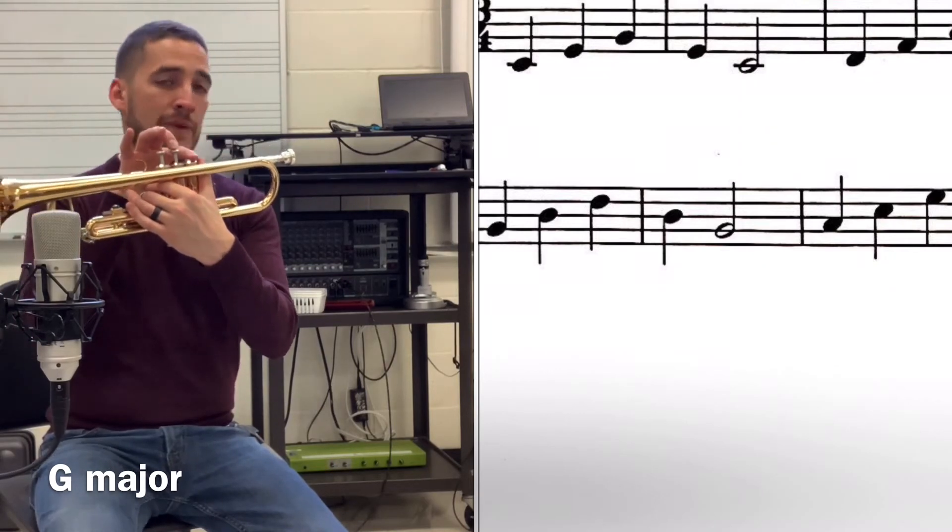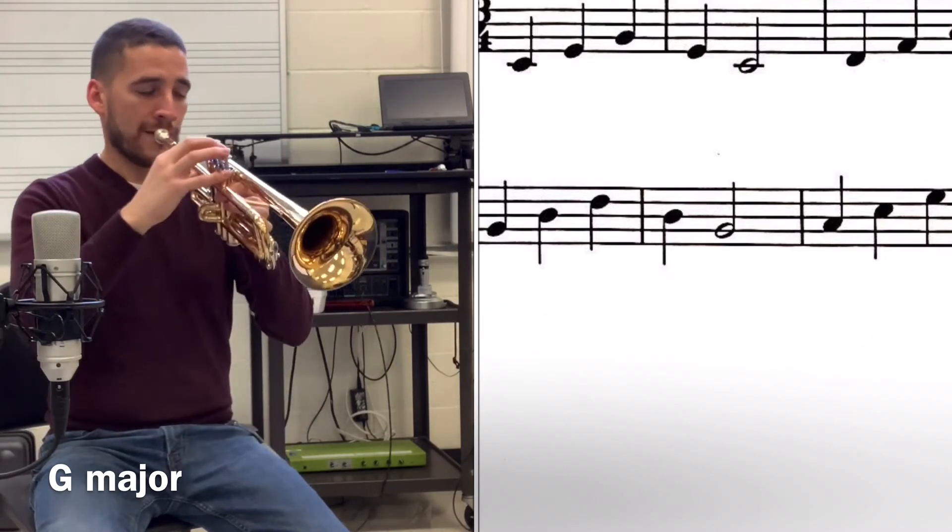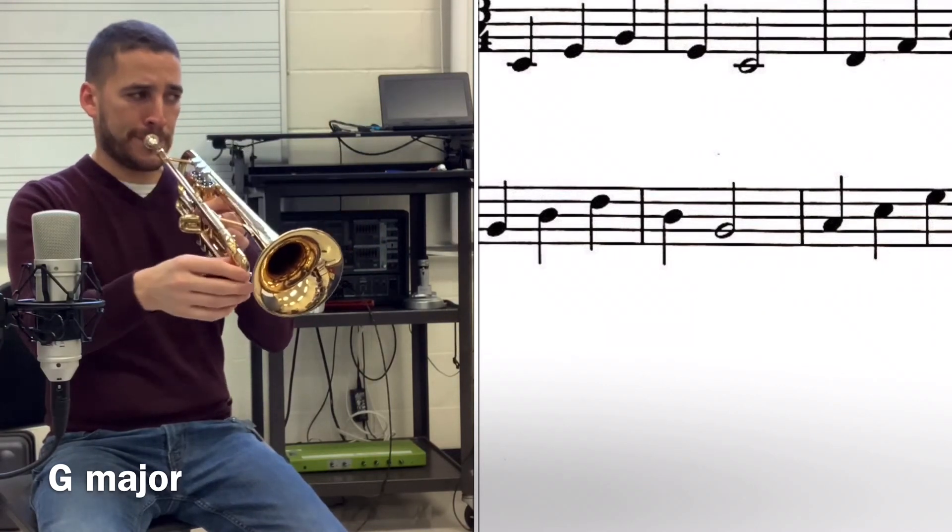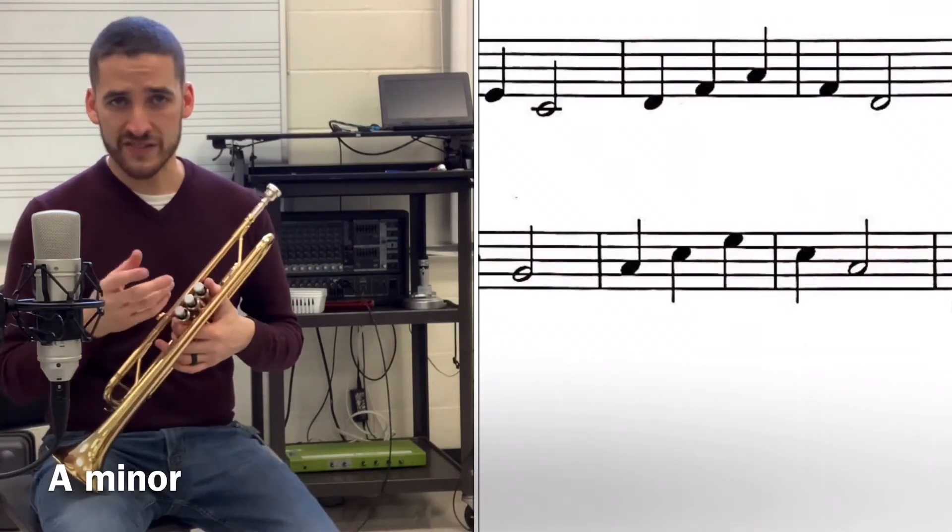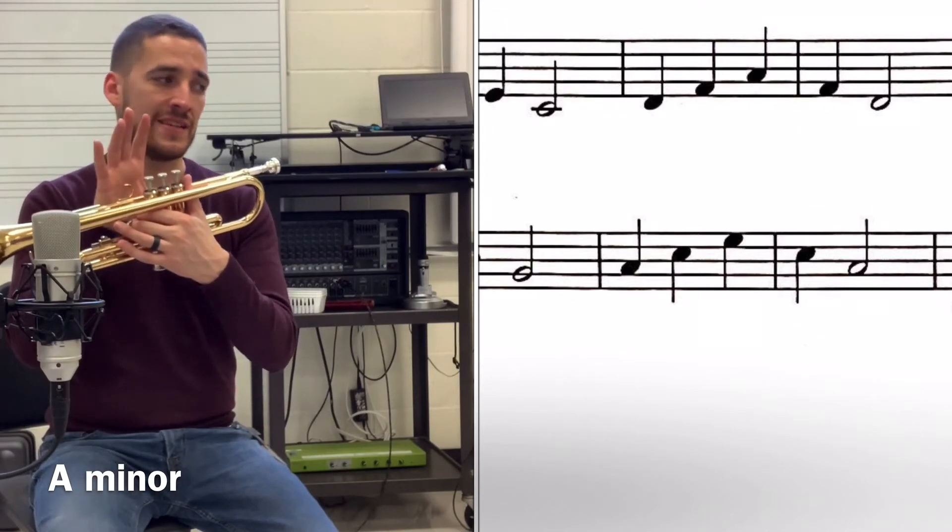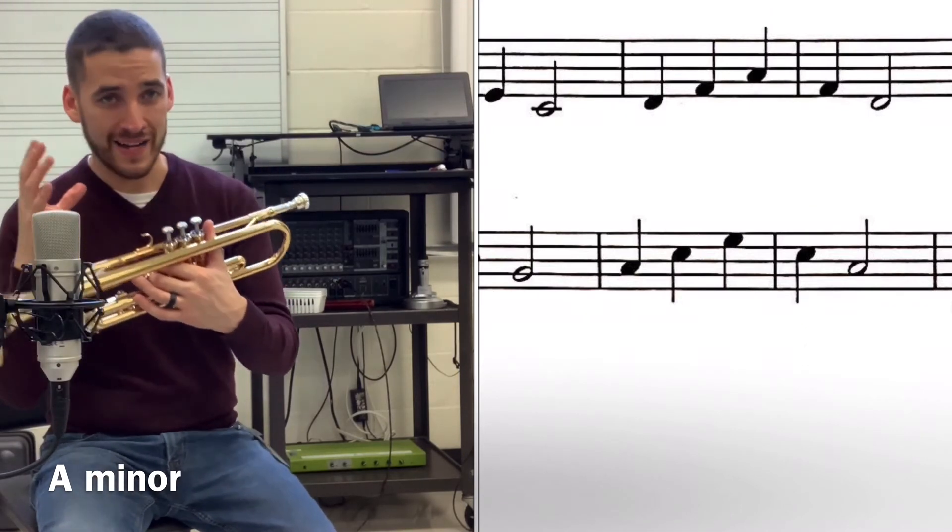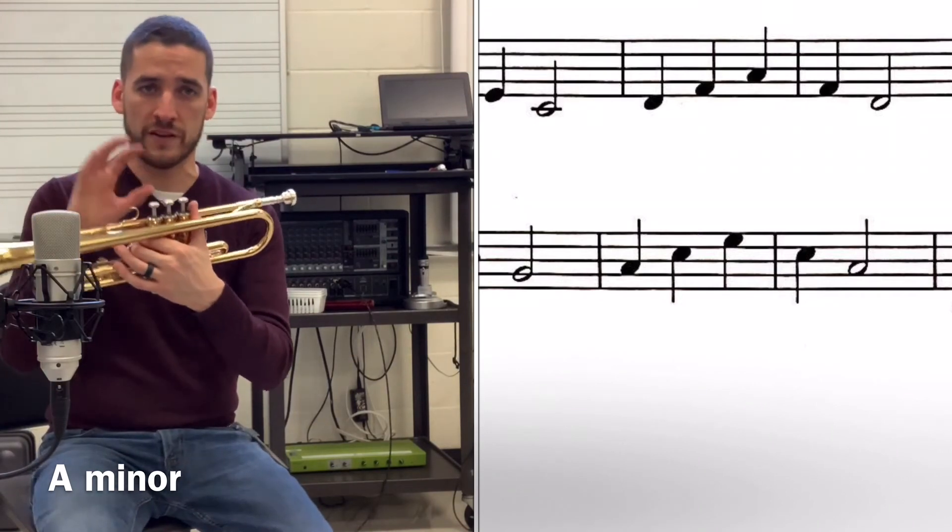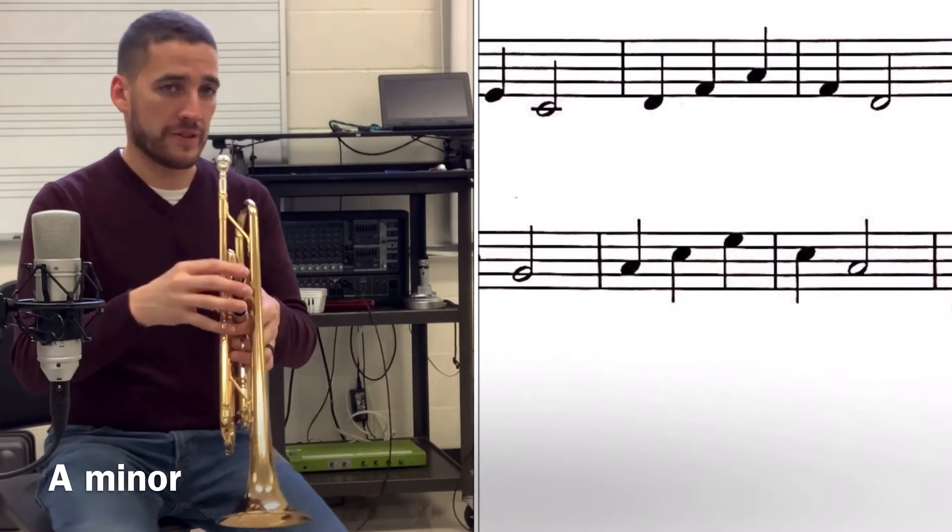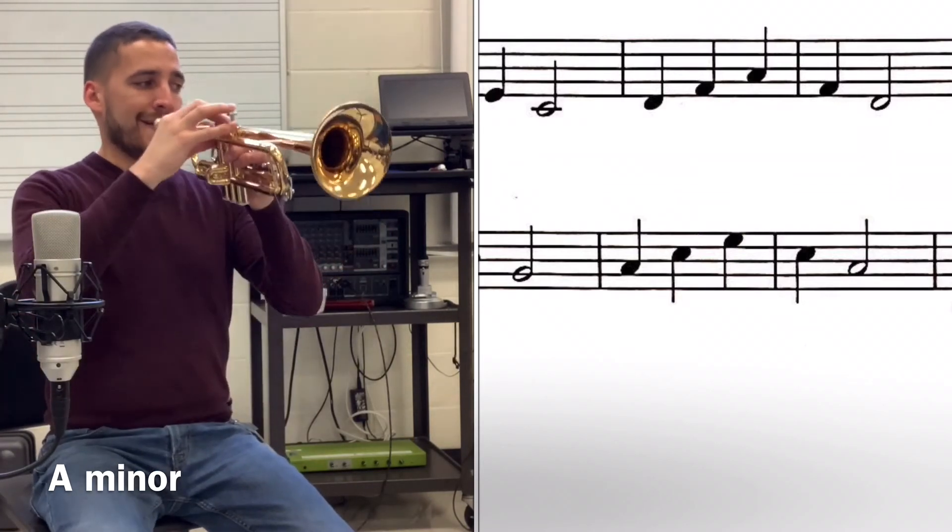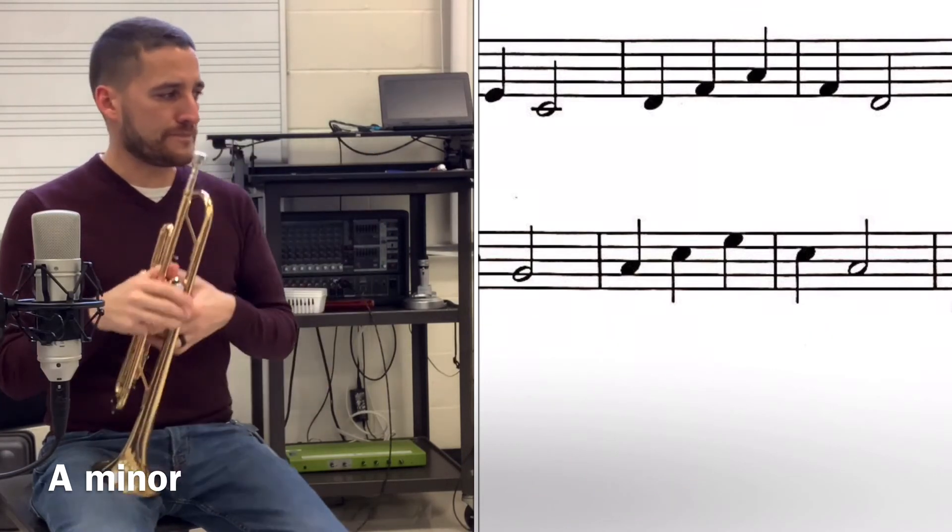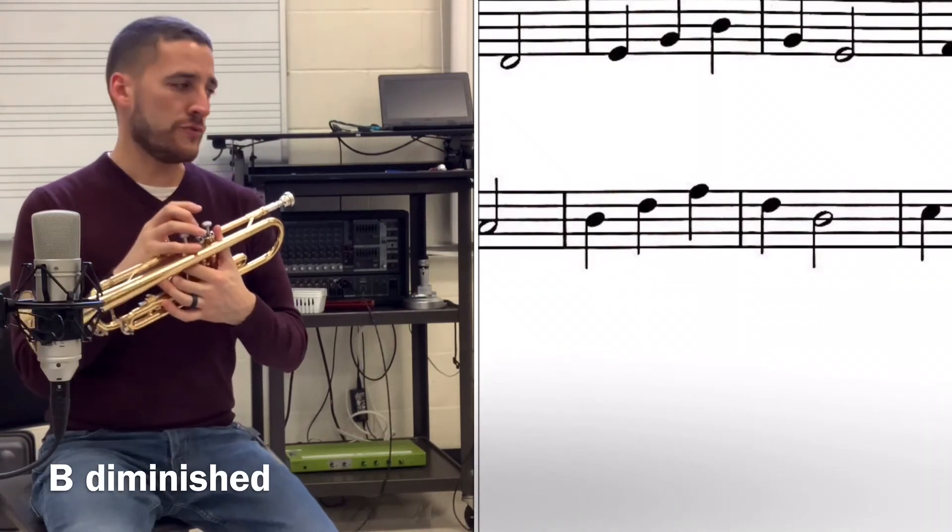Number six, this is A, and this is a minor arpeggio. We have A, C, E, C, A. Of course, the high E you don't play one and two, you play it open. So we have A, one and two up to C which is open, and then E which is open, so we're using our lips quite a bit there. Here we go.